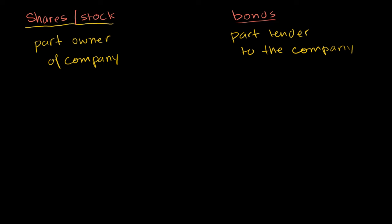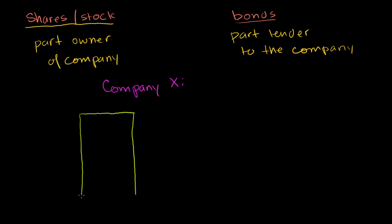To make this more tangible, let me draw a simple balance sheet for some Company X. If we look at Company X's assets — and assets are the same thing we mean in everyday life: things that have value, things that give us some future benefit. A house is an asset, a car is an asset, cash is an asset, and a loan you've made to someone else is an asset. Let's say Company X's assets are worth $100 million.